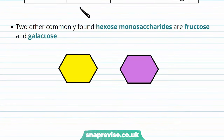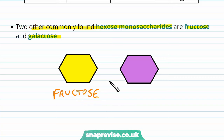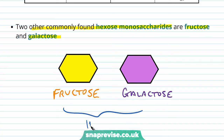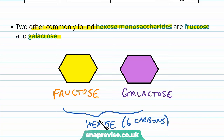There is one hexose mentioned here — glucose — but there are two other commonly found hexose monosaccharides: fructose and galactose. Both are still monosaccharides, so single-unit carbohydrates, but they're both hexoses with six carbons. So there are different layers here: hexose refers to how many carbons; monosaccharides are the individual units of any carbohydrate; and carbohydrate is the whole family. Think of it in different layers.